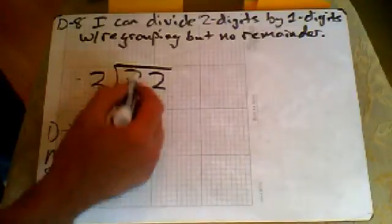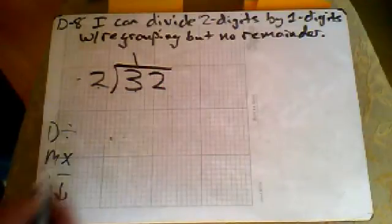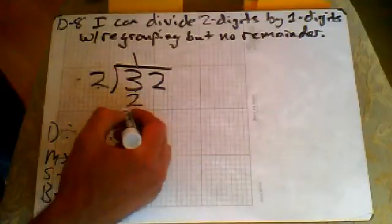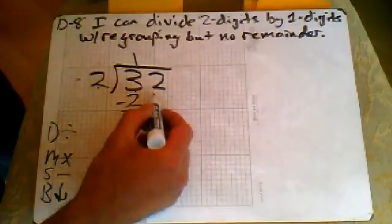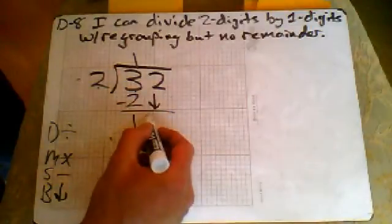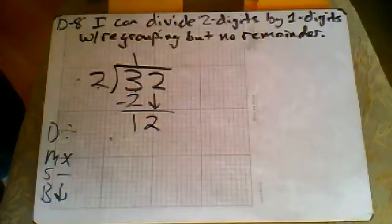So will two go into three? Two will go into three one time. So one times two is two. Subtract. It's our subtraction step. Two from three is one and then bring down step. So we're going to bring down that two. So we have this two. There's 12 now.